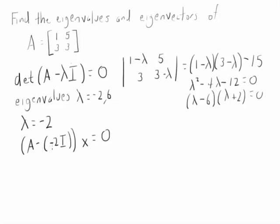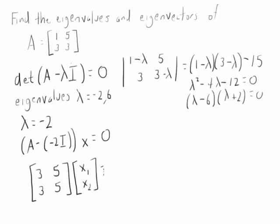So we're going to be subtracting negative 2 — or actually adding 2 — to the numbers on the diagonal. So we will have 3, 5, 3, 5. Same equation! X1, X2 equals 0, 0. If you rewrite this, you get 3X1 plus 5X2 equals 0.